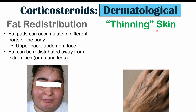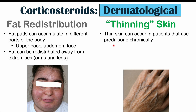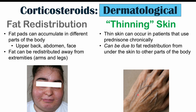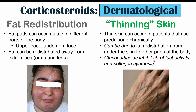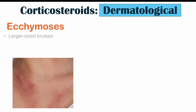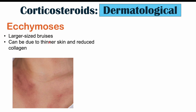We can also see thinning skin with corticosteroid use, which applies to topical corticosteroids as well, especially with long-term use. More specifically, glucocorticoids can inhibit fibroblast activity. Fibroblasts create collagen and also impact elastin functioning, so the skin loses collagen and thins out with use — occurring both systemically and topically. We can also see ecchymosis, which is the medical term for larger-sized bruises. These bruises occur more easily due to the skin being thinner and having reduced collagen.